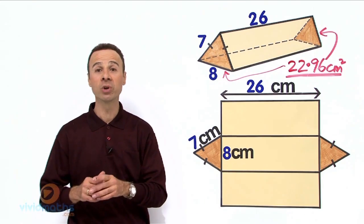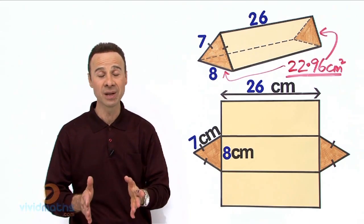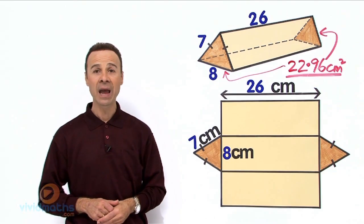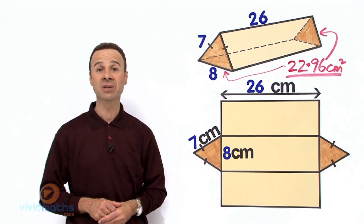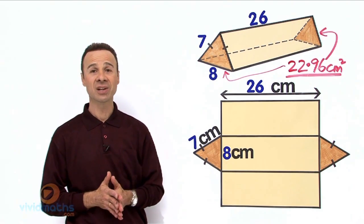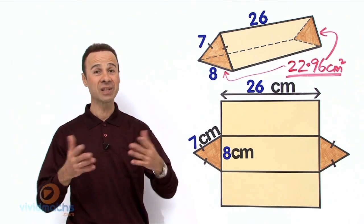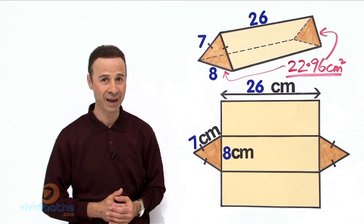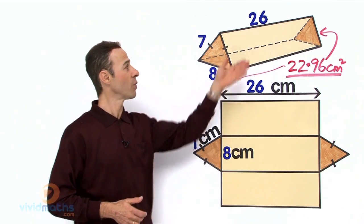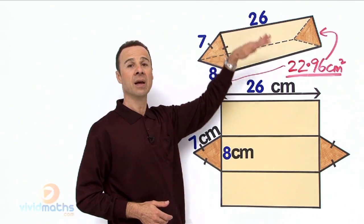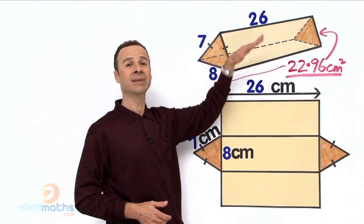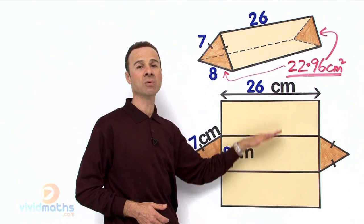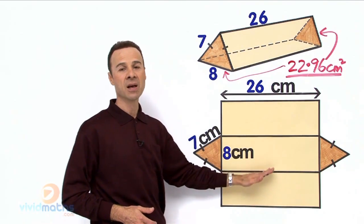We have 3 faces left to work out. Remember all units are in centimeters so the final answer will be in centimeters squared, and we are looking for an answer to 2 decimal places. The 3 remaining faces are the panels that wrap around — they are the 3 rectangles that when flattened out appear across here.